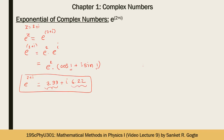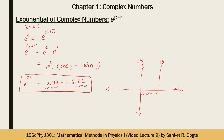For example, e^(2 + i) = e^2 · e^i = e^2 · (cos 1 + i sin 1) ≈ 3.99 + 6.22i, where the angle 1 is in radians. In the Argand plane, this point has real part 3.99 and imaginary part 6.22.